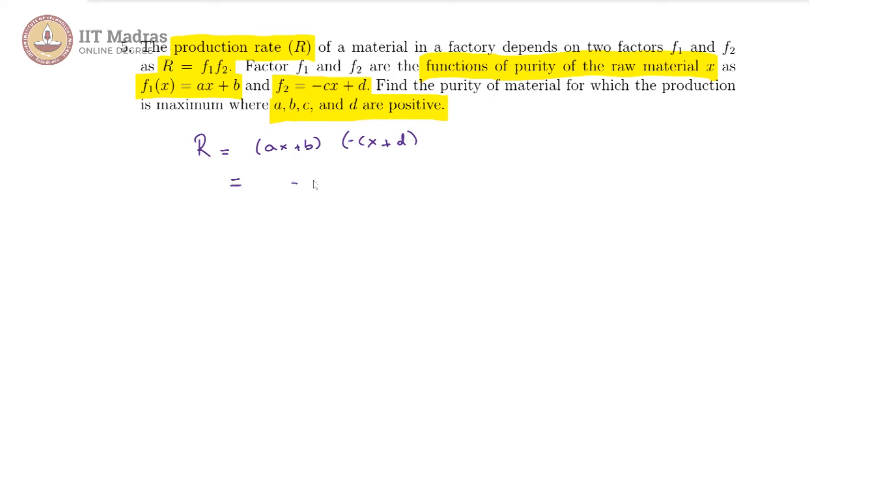So that gives us minus ac x squared plus ad x minus bc x plus bd. And this gives us minus ac x squared plus ad minus bc times x plus bd.